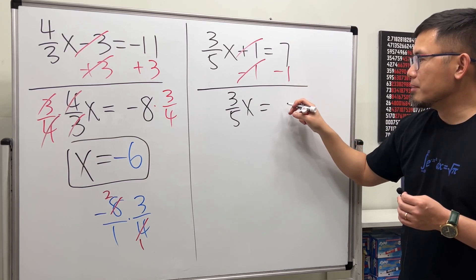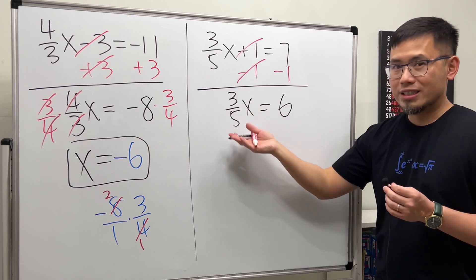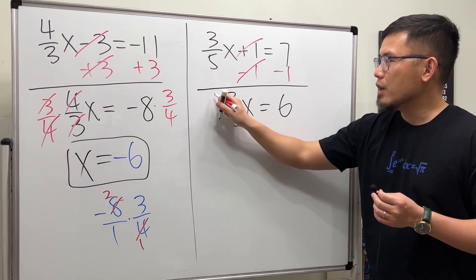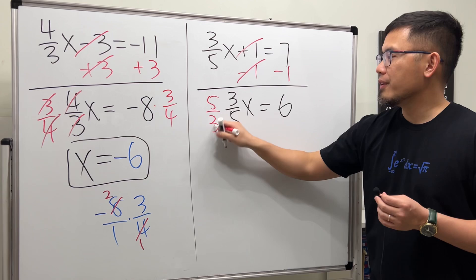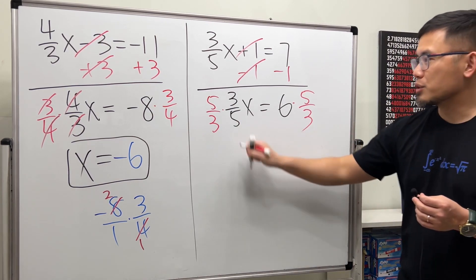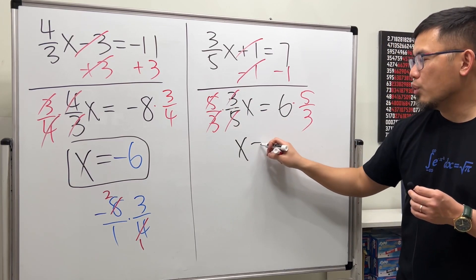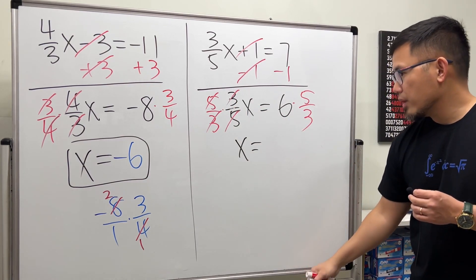Now what do we do? The reciprocal, both sides. So this is 3/5, we need to multiply by 5/3 on both sides so that they can cancel, and we just get x equals...